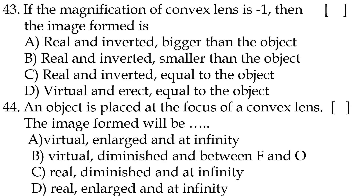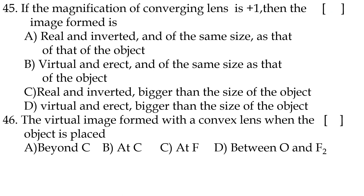Forty-third question: if the magnification of a convex lens is −1, the image formed is option C — real and inverted, equal to the object size. Forty-fourth question: an object placed at the focus of a convex lens — the image formed will be option D, real, enlarged, and at infinity.